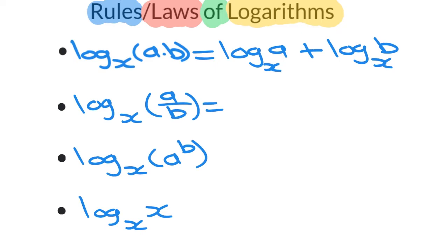The next rule there, we have log of a quotient, or log a over b base x. How do we rewrite that out? That's going to be log a base x minus, in this case, log b base x.